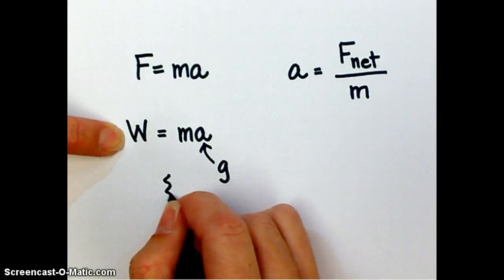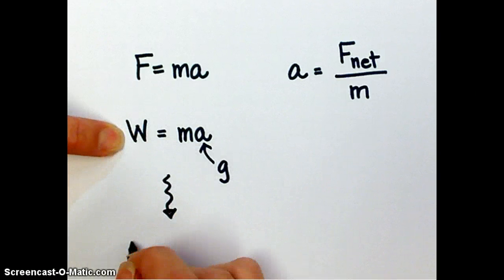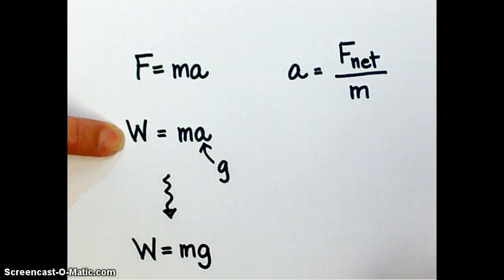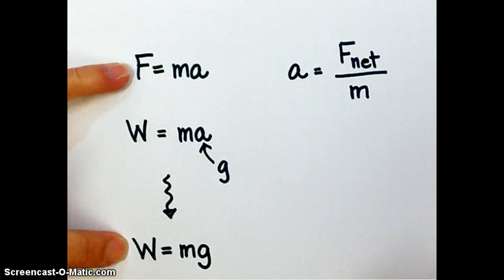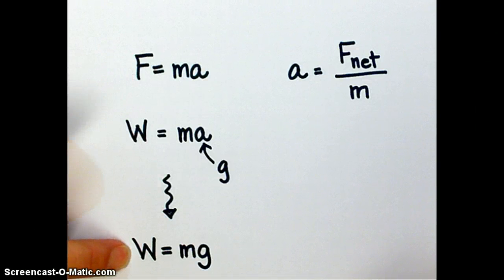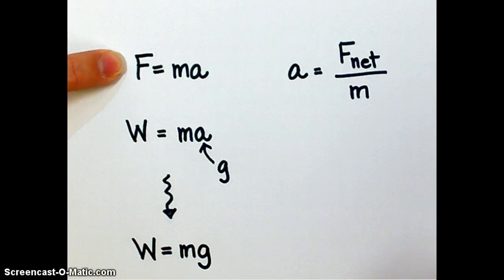And so that formula quickly becomes something that looks like a new formula. But really, this formula down here is the same as this one. It's just W equals mg — weight is equal to mass times the acceleration due to gravity — which is a specific version of force equals mass times acceleration.